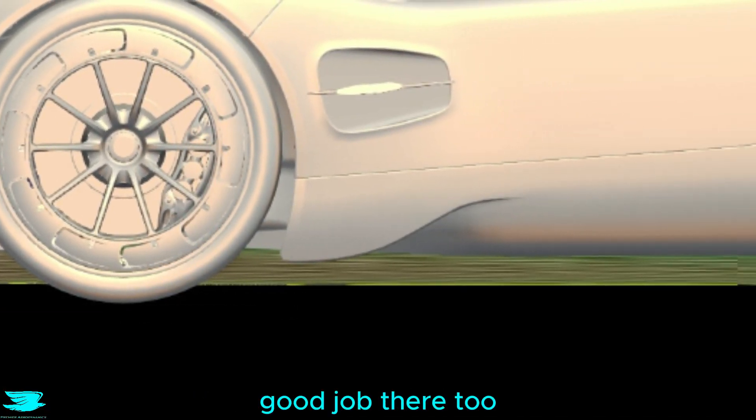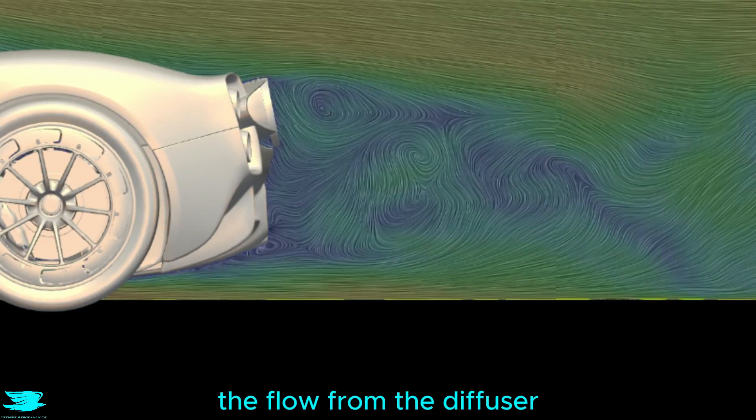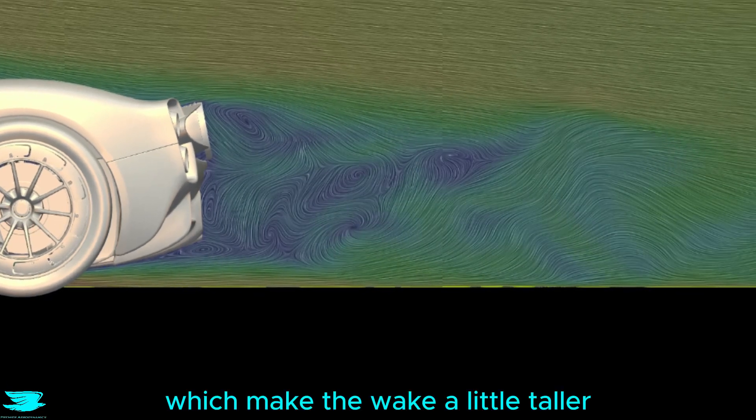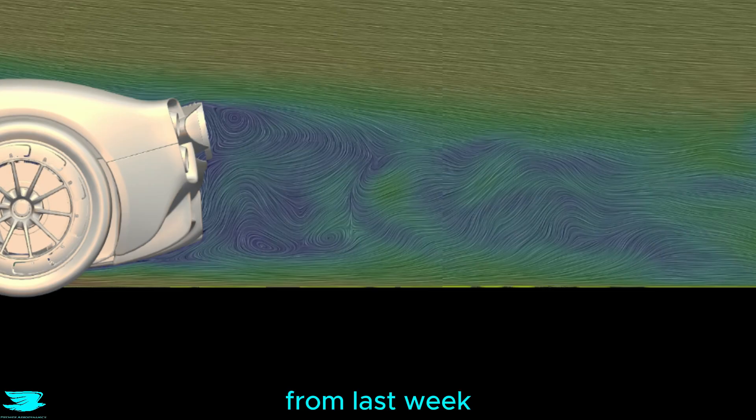The underbody does a good job there too, keeping the flow attached and well behaved. The wake is made up by the struggle between the flow from the diffuser and the flow over the trunk. Two large vortices form because of that, which makes the wake a little taller than some other supercars, for example, the Lamborghini Sian's from last week.